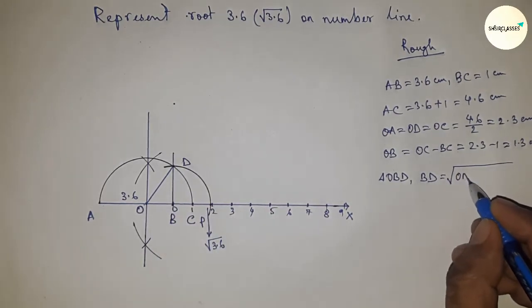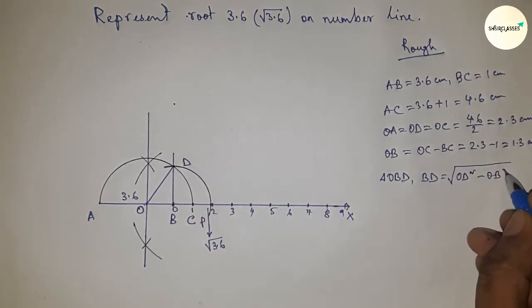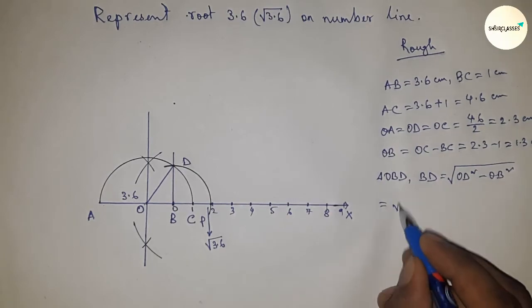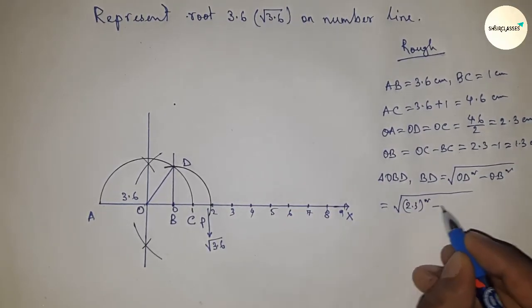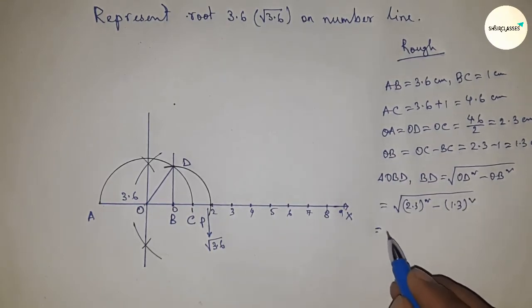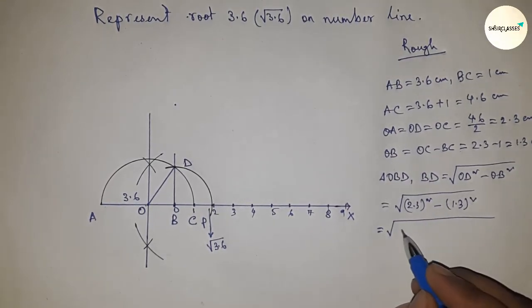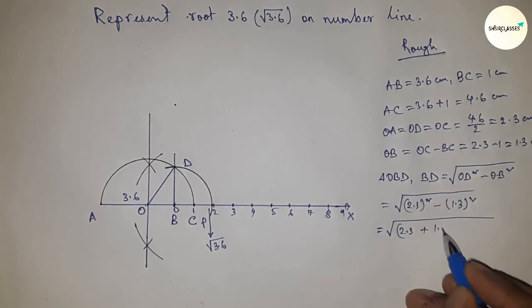Putting the values of OD and OB, this is 2.3 whole squared minus 1.3 whole squared. Now using the formula a squared minus b squared equals (a+b)(a-b), we get the square root of (2.3+1.3)(2.3-1.3).